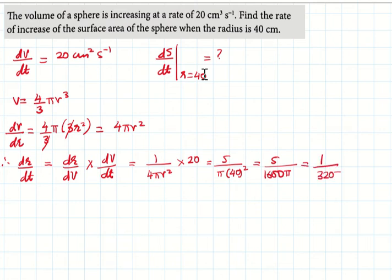So 1/(320π). We found dr/dt. Now what we will do is use the formula that links the surface area to the radius. So surface area equals 4πr². Differentiate that.